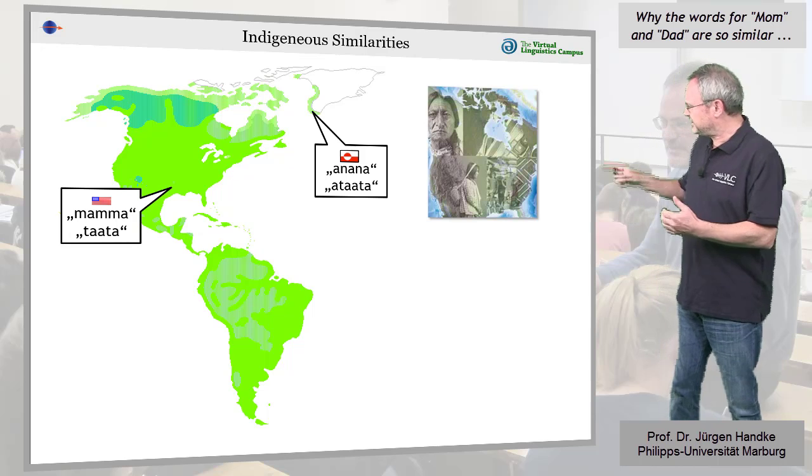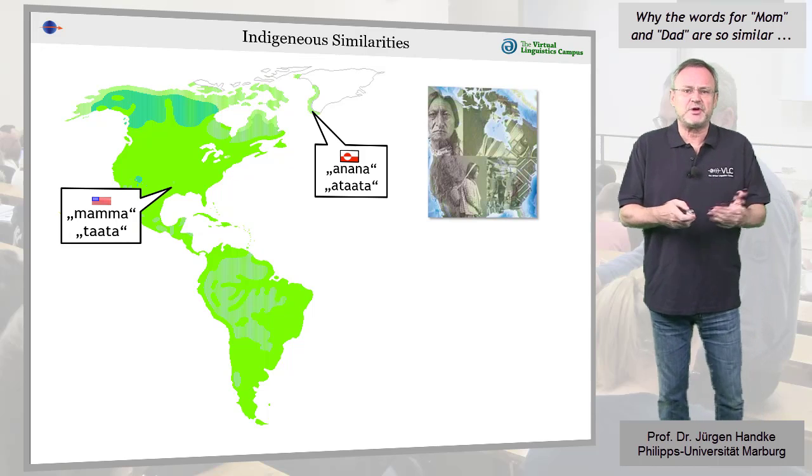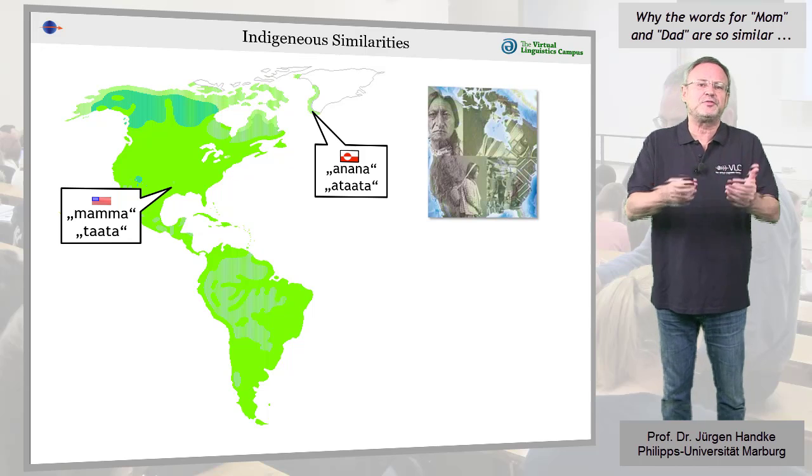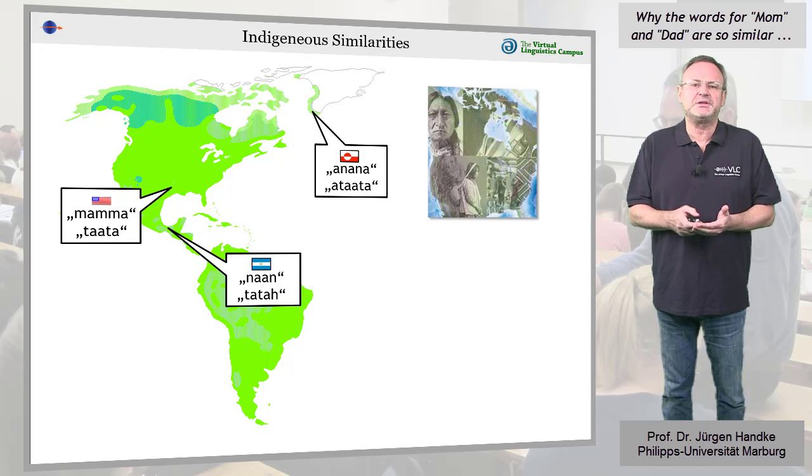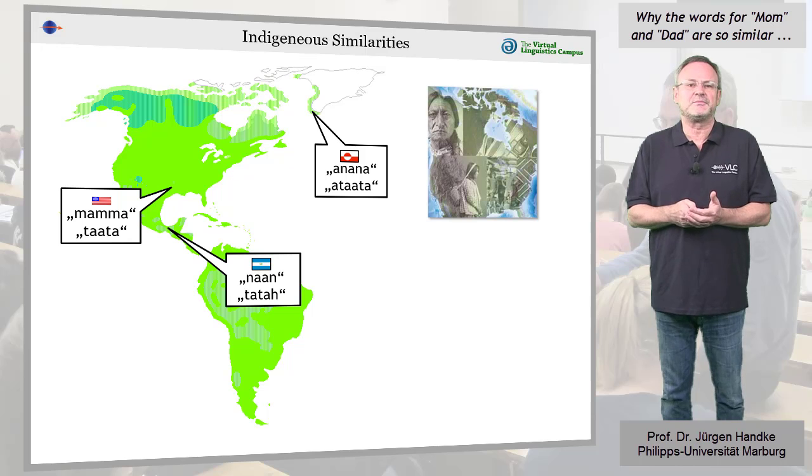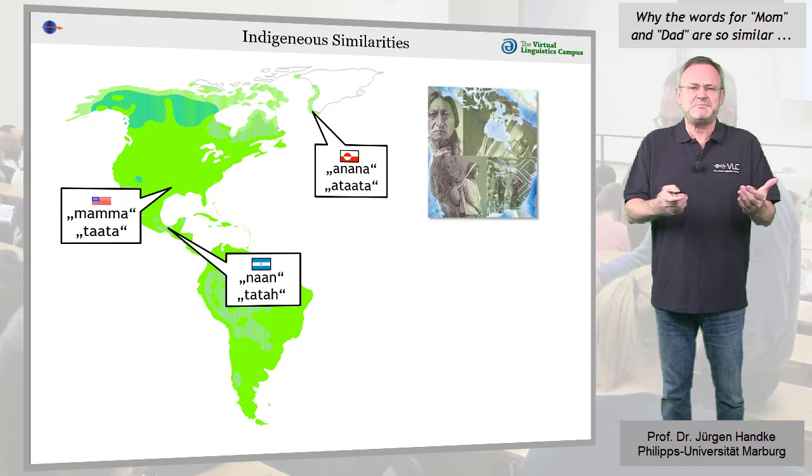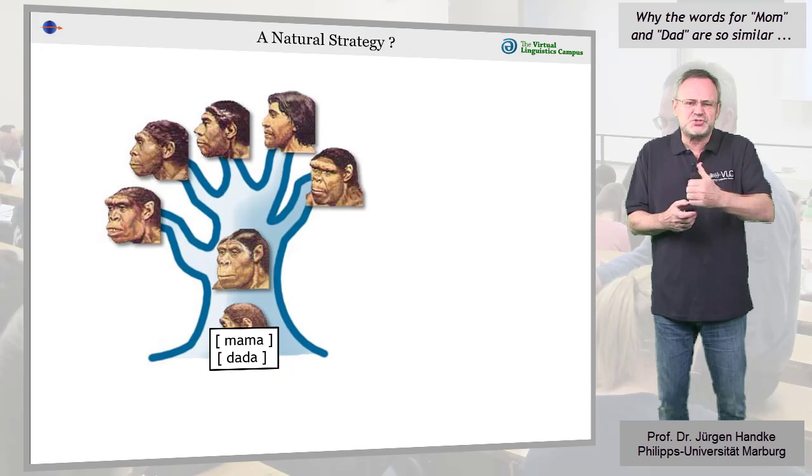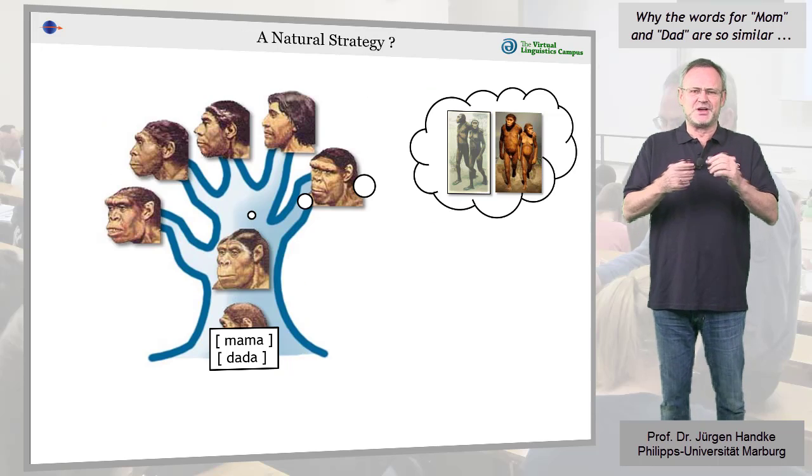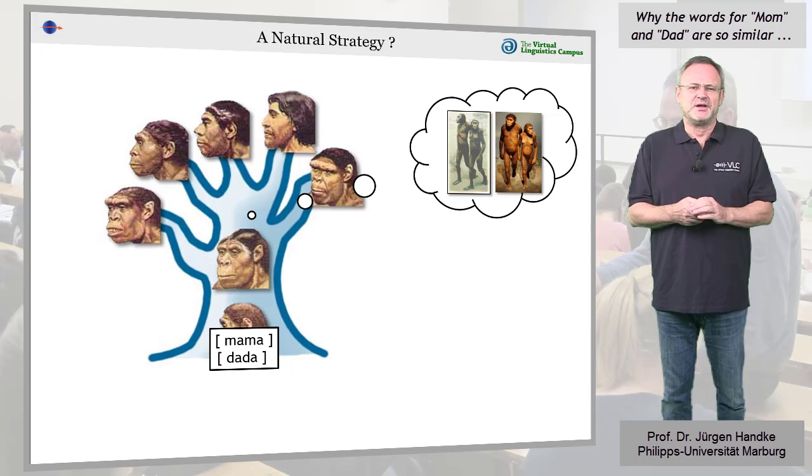Kwasati, spoken in Louisiana and Texas, turns out to have mama and tata. And down further in El Salvador, Pipil has nan and tata. It's tempting to assume this means that the first humans called their parents mama and dada.